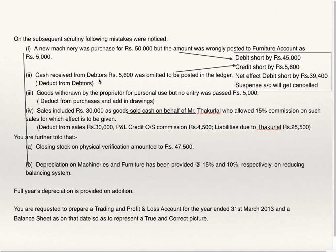Second adjustment: cash received from debtors of 5,600 was omitted to be posted in the ledger. Cash received is recorded in cash account but they have not posted it to the debtors' ledger. So deduct it from debtors. In these two transactions, only a one-sided error is there. That is the reason why the difference has gone to suspense account.